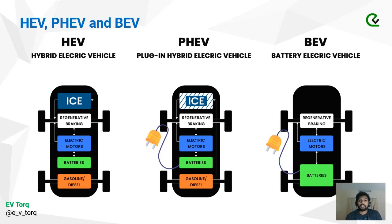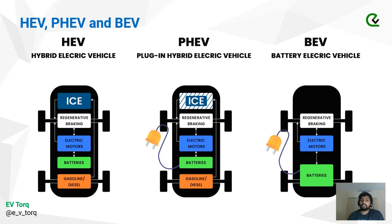PHEVs have much bigger batteries and are rechargeable. If you want, you can switch between battery and engine — you can turn off the engine and drive on battery alone, then start the engine when needed. However, these batteries are very small compared to a fully electric vehicle, so you get a limited range. Even in PHEVs, the main driving component is still the IC engine. PHEVs are not very common in India; the Toyota Prius is one example that was launched.